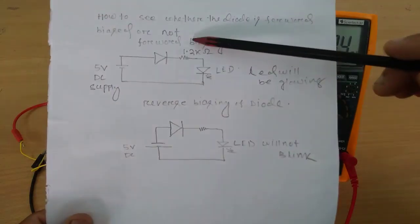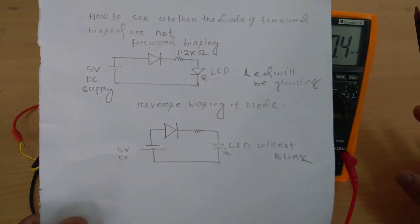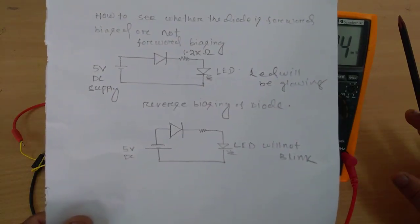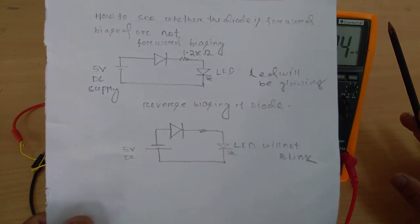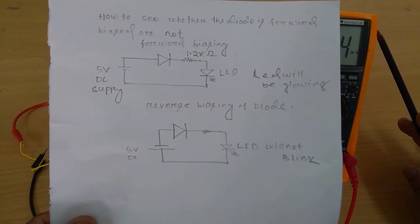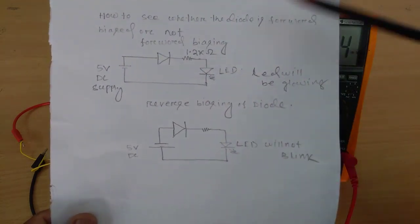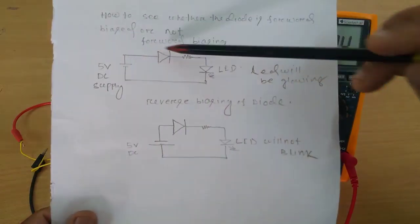This is the forward biasing configuration but if we don't know how the diode is being forward biased, connect the diode randomly either in forward biased or reverse biased, it doesn't matter, but the circuit configuration should form a loop.